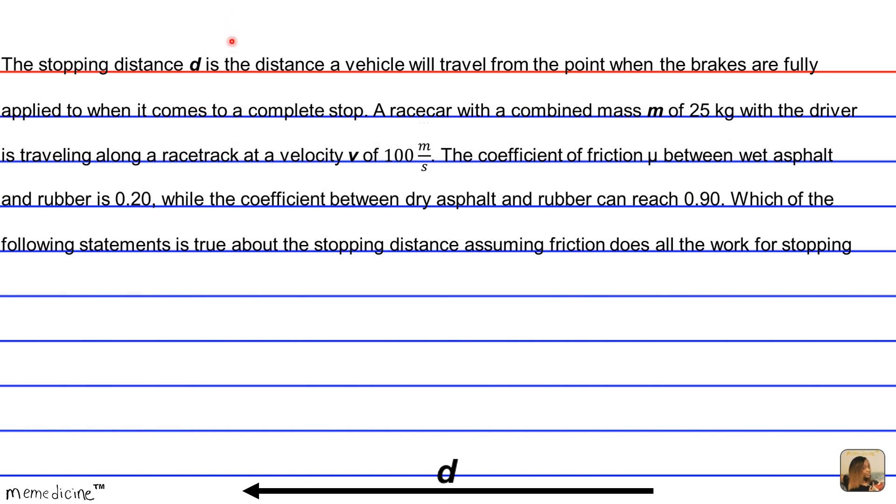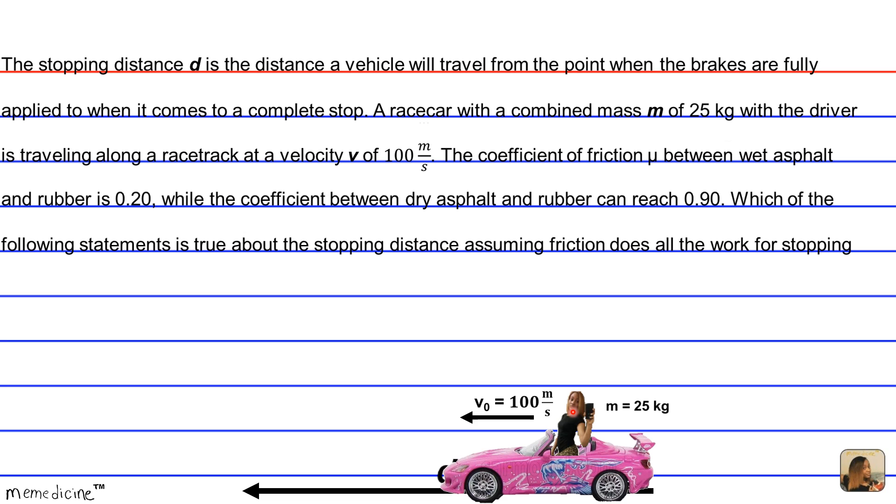In order to answer this question, it's essential that we come up with an equation for the stopping distance d. The car starts with an initial velocity v₀ of 100 m/s, and then it comes to a complete stop with a final velocity of zero.